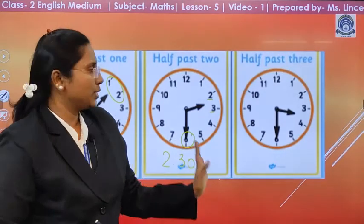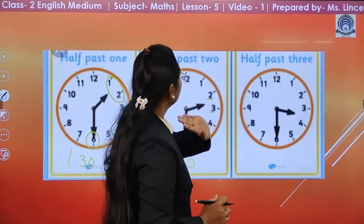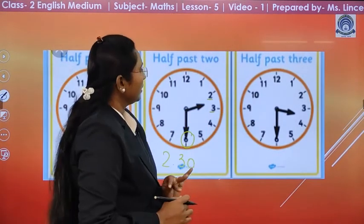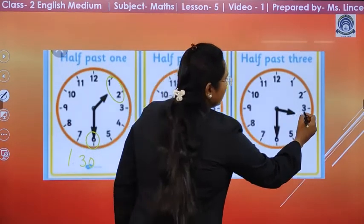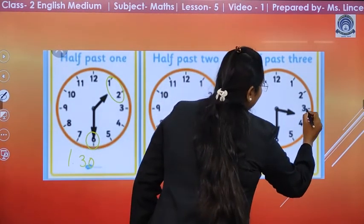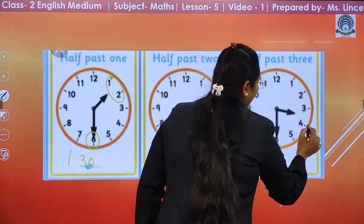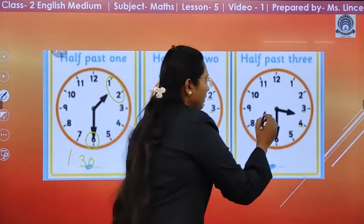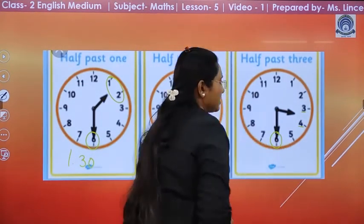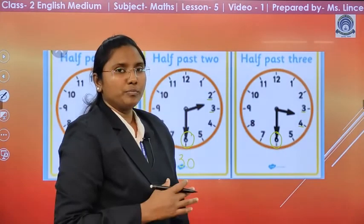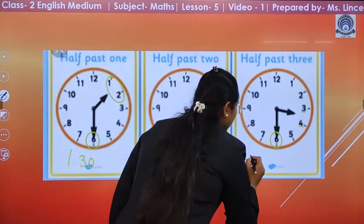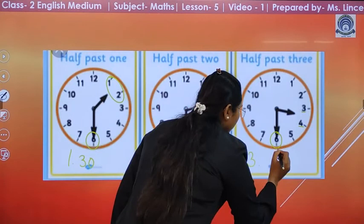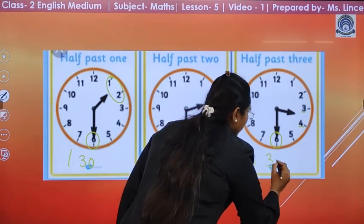Now, the last clock. The hour hand is on 3 and 4 and the minute hand is on 6. So, half past 3, that is, 3.30.